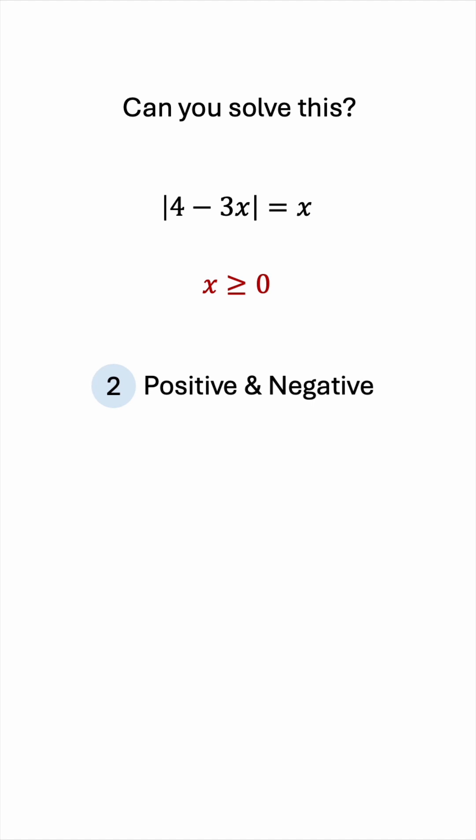The second method is the more typical approach, and it's to consider both the positive and negative versions of whatever's inside the absolute value. In this case, we have 4 minus 3x.